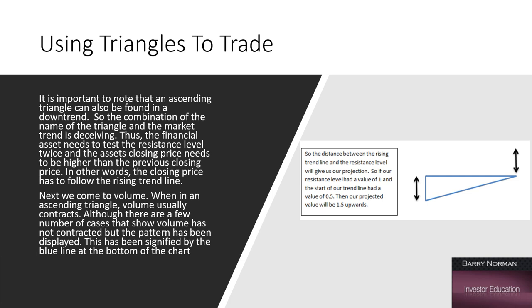Once we've realized that we have a triangle pattern, we can use that triangle to set our take profit points, our momentum, how far we expect the triangle to move when it breaks out. And the standard formula for triangles is we can expect the momentum of the breakout to carry the same width of the base of the triangle. Some people say one and a half. I'm conservative. I use one. So, it's important to note that an ascending triangle can also be found in a downtrend. So, the combination of the name of the triangle and the market trend are deceiving.